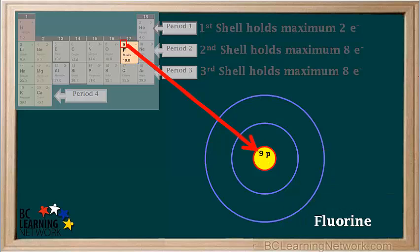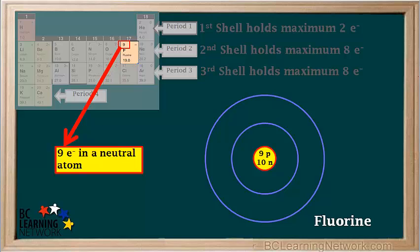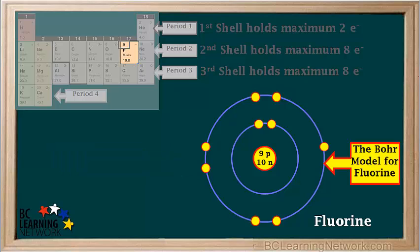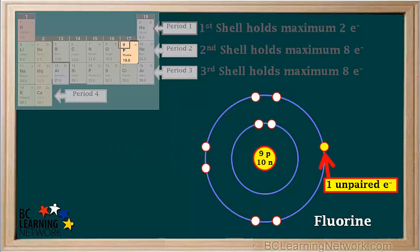Fluorine has nine protons, and 19 minus 9 equals 10 neutrons in its nucleus. Fluorine has nine electrons in a neutral atom. Its second shell has three lone pairs at right angles to each other and one unpaired electron. This is the Bohr model for fluorine.